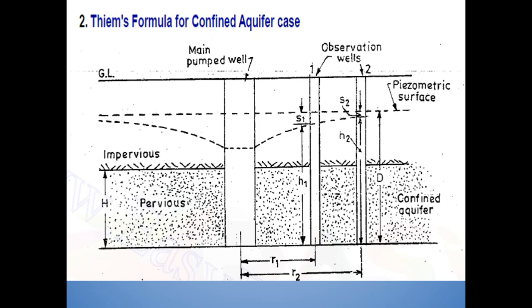This is the schematic diagram for Thiem's formula for confined aquifer case. Thiem derived the formula in continuation with the Dupuit equation. So this particular figure can be used for derivation of Dupuit equation as well. Here as you can see in the figure, there is a main well from which the pumping is to be done. The well is dug up to the full depth of the aquifer and this is the portion of the confined aquifer. The portion of the well is embedded or contained in two impervious layers and this is what the confined aquifer having a depth equal to capital H.